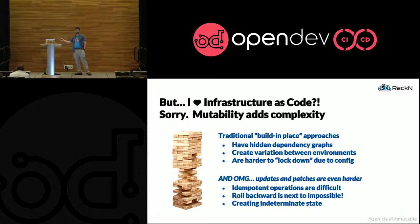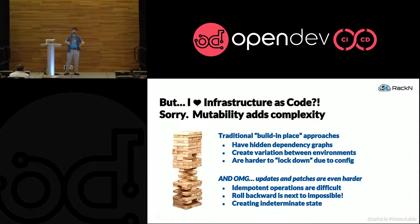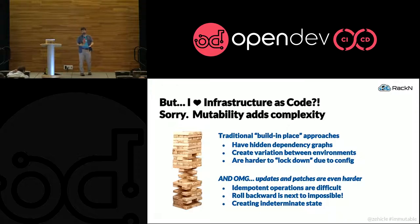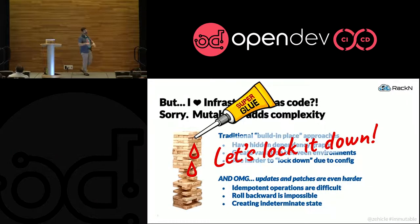We all want day two automation, but that means we're actually touching the systems. Idempotent operations are very hard. If I'm going to run an Ansible playbook twice on a system, it's highly likely that I'll get a failure or strange results, especially if that playbook changed between runs. I want to be able to roll back when I identify a bug — that's very hard with a configuration management system. And that ends up creating indeterminate states. So the answer is to lock it down, to do fewer of these dangerous operations in the field.